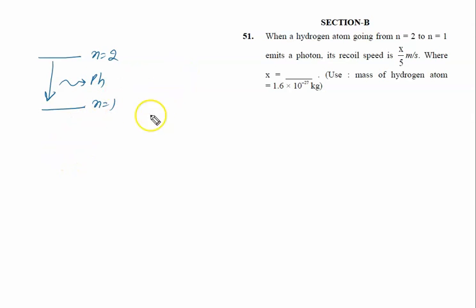Its recoil speed is x/5 m/s. If the photon travels in this direction, recoil speed means the hydrogen atom is going in this direction. The speed of the hydrogen atom is given by x/5 meters per second. That is the value of x we need to find.